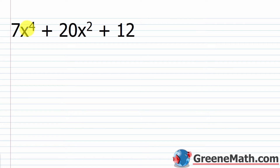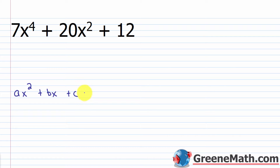Suppose you see 7x to the fourth power plus 20x squared plus 12, and you're asked to factor this. You might say you don't know how to do that, but you're used to seeing something that looks like ax squared plus bx plus c. Here we have something times x to the fourth power plus something times x squared plus a constant.